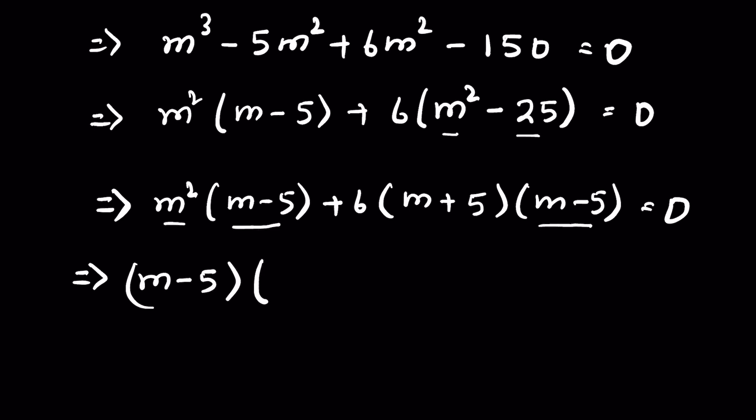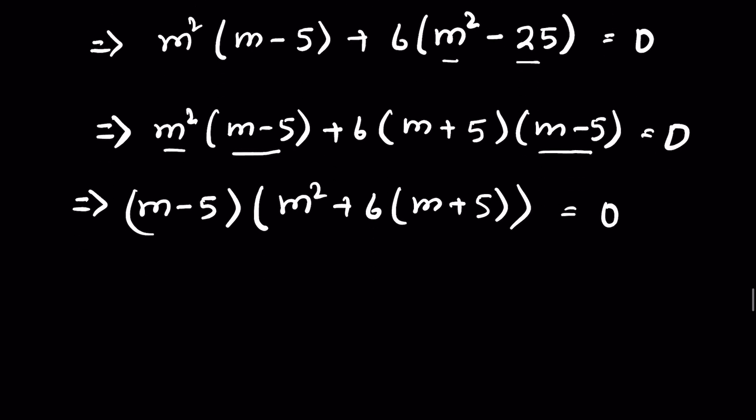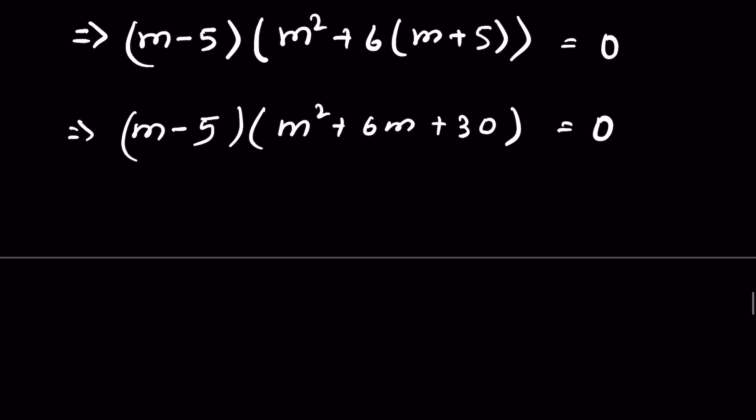Taking (m - 5) as common, we get (m - 5)[m² + 6(m + 5)] = 0, which simplifies to (m - 5)(m² + 6m + 30) = 0. Now we have two cases for solutions.